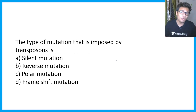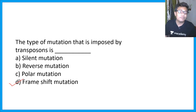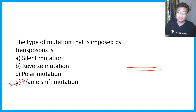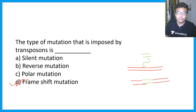The next question: the type of mutation imposed by a transposon is silent mutation, reverse mutation, polar mutation, or frameshift mutation? The most common type of mutation evoked by a transposon insertion is a frameshift mutation. Imagine a DNA segment where the transposon integrates at a random location — the ORF would now be shifted, the previously read ORF changes, and the protein product would be altered. So frameshift mutation is the most appropriate answer.